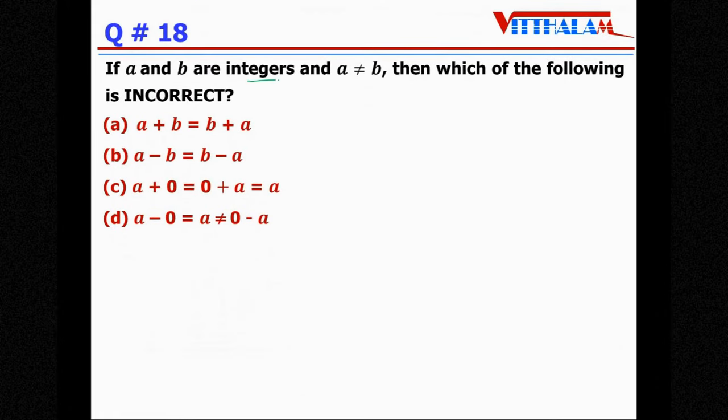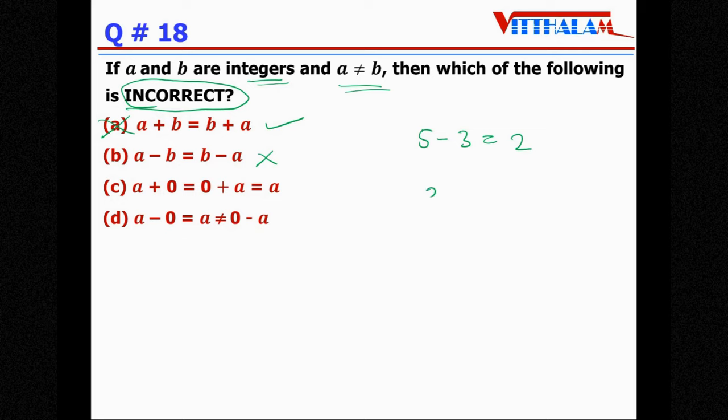Next, if a and b are integers, a is not equals to b, then which of the following is incorrect? Option a, a plus b equals to b plus a, yes it's correct so this is not the answer. A minus b equals to b minus a, no it can't. 5 minus 3 equals to 2, we can't do 3 minus 5, it is minus 2 it becomes negative integer, so therefore our answer is b, no need to go for c and d.